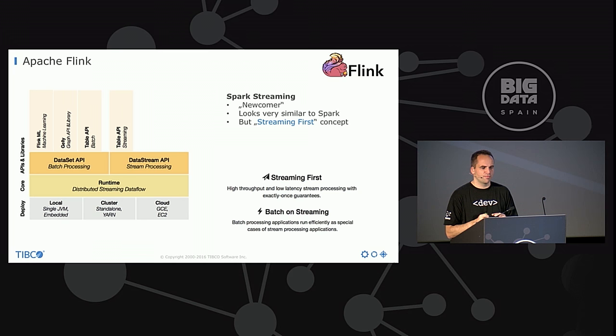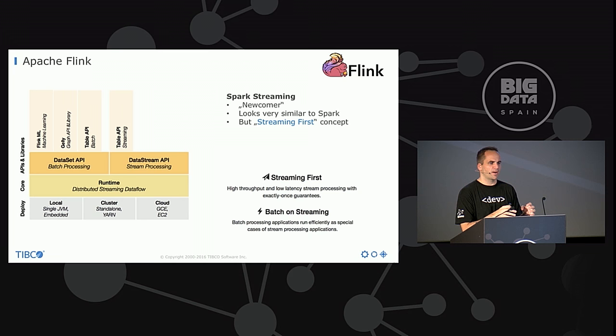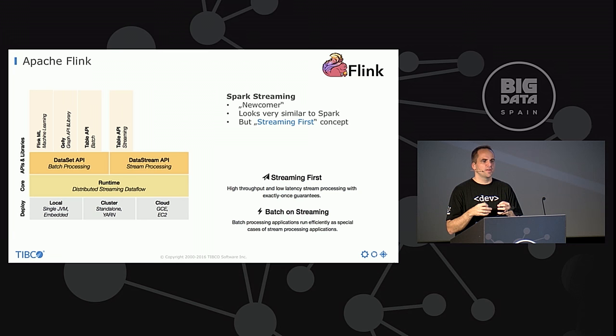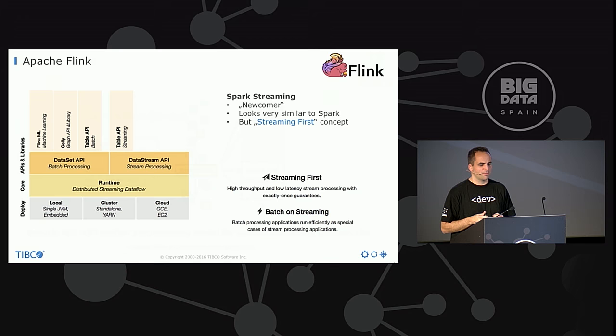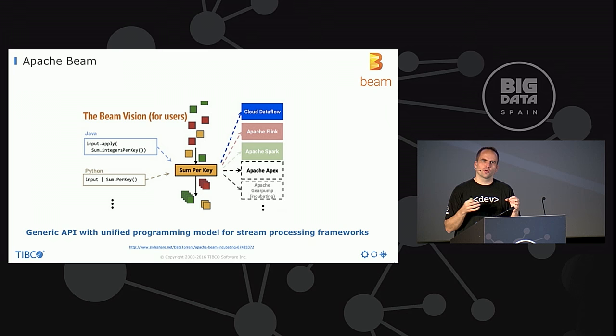Apache Flink is another newcomer that looks similar to Apache Spark in architecture and components. But the key difference is that this one was really built for streaming first — contrary to Spark Streaming which uses micro-batches, Flink was built from the ground up with streaming-first intention. There's a talk later about Apache Flink where they'll explain why Flink exists and what makes it different. One challenge is that the number of open source frameworks is growing and it's getting hard to know which one to use.